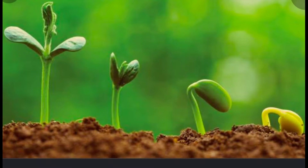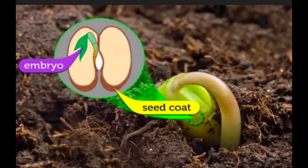Children, do you know that most plants produce a large number of seeds? These seeds germinate and grow into new plants. New plants also grow from other parts of plants like stem, roots and leaves. In this chapter we will learn how new plants grow from seeds and other parts of plants.